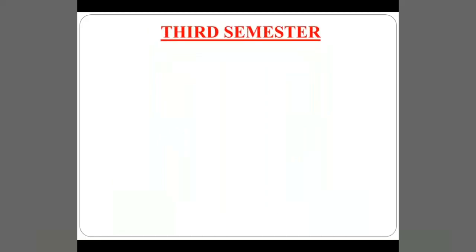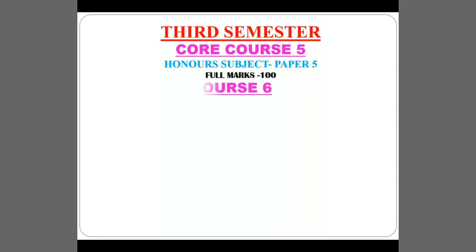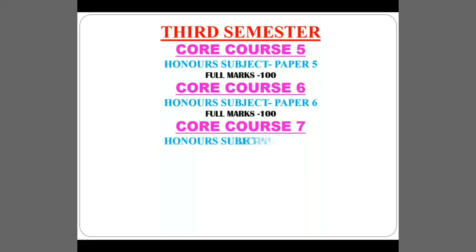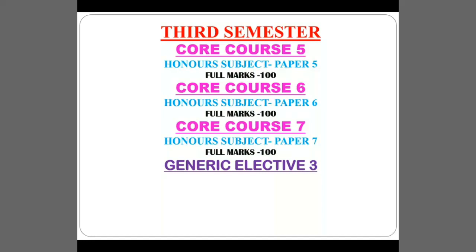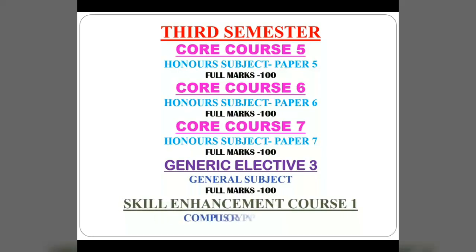Third semester contains core course 5, honours paper 5 with full marks 100; core course 6, honours paper 6 with full marks 100; core course 7, honours paper 7 with full marks 100; generic elective 3, which is the general subject paper with full marks 100; and a skill enhancement course, a compulsory paper.